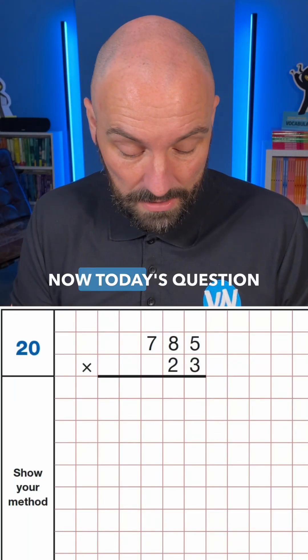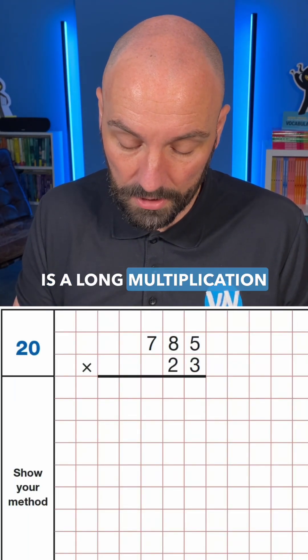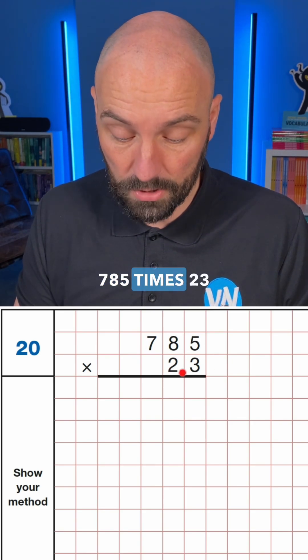Can you solve this SATs question? Now today's question is a long multiplication. We can see that 785 times 23.